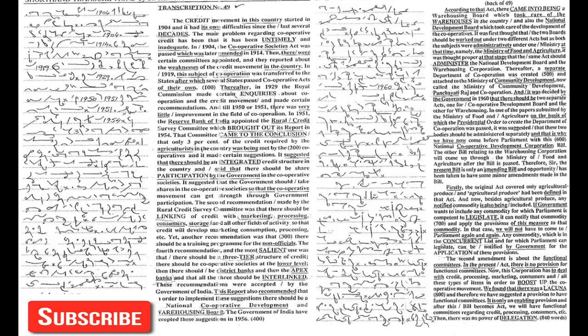Then there were certain committees appointed and they reported about the weaknesses of the credit movement in the country. In 1919 this subject of cooperation was transferred to the states, after which several states passed cooperative acts of their own. Thereafter in 1929 the Royal Commission made certain inquiries about cooperation and the credit movement and made certain recommendations. Until 1950 or 1951 there was very little improvement.